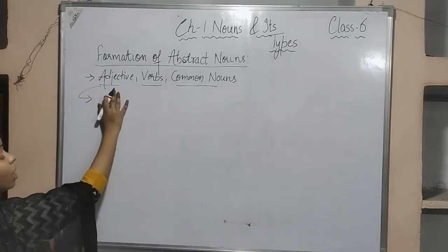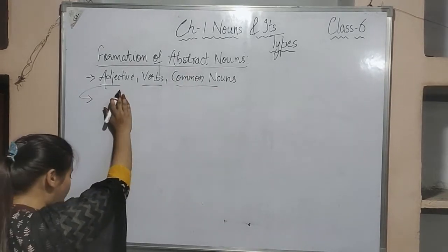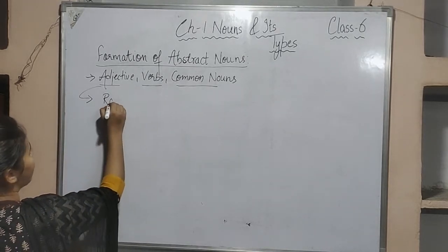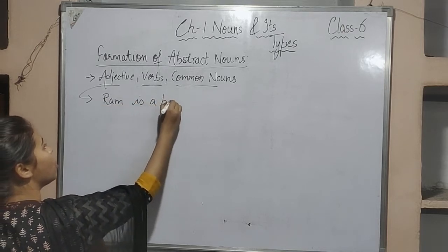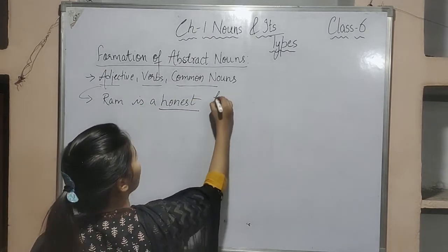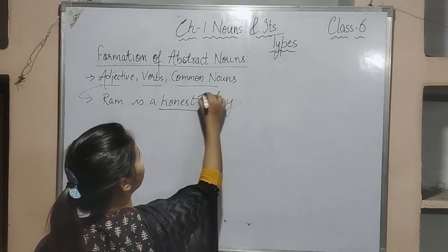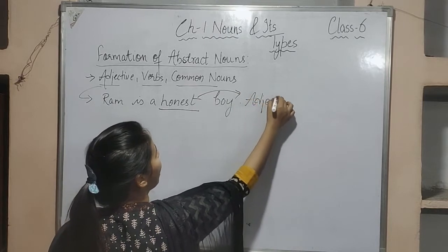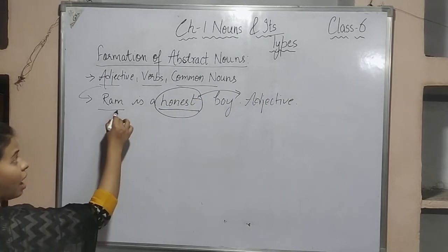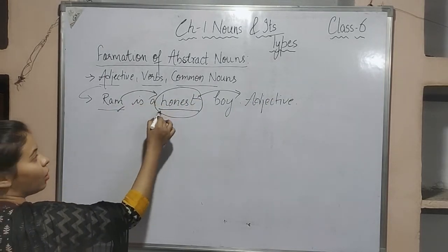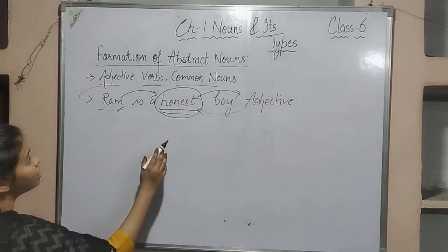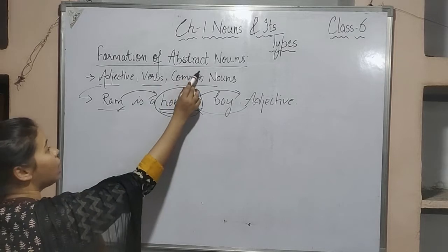First, I will explain how to form abstract noun using adjectives. For example, 'Ram is an honest boy' — the word 'honest' is an adjective because it describes the quality of Ram. But in the sentence 'Ram is known for his honesty,' the word 'honesty' is not an adjective — it is an abstract noun. So 'honest' has been converted into 'honesty.'